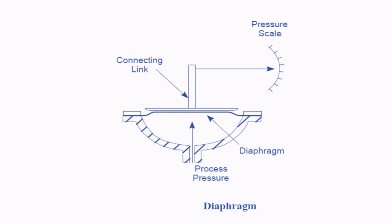Finally we have diaphragm gauges. A diaphragm is essentially a flexible disc that changes shape when the pressure changes. You can see here that the center part of the diaphragm is exerted upon by the pressure, and it moves such that it moves a connecting link, which is connected to a pointer that moves on the dial scale. This is how a diaphragm gauge works, and these are the three different types of deformation gauges.